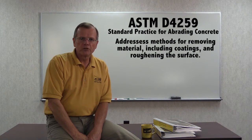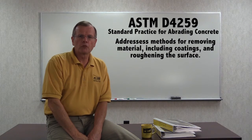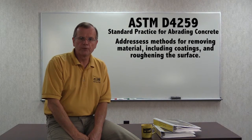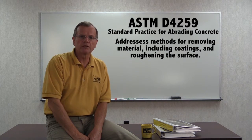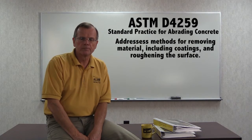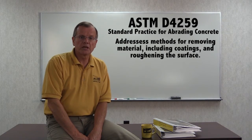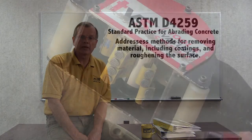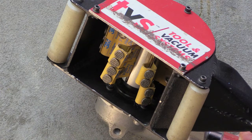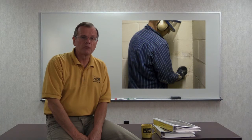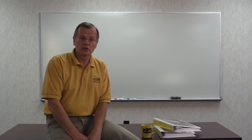ASTM D4259 addresses methods for removing material, including coatings, and for roughening the surface. The methods addressed in this standard include mechanical abrading, which involves power tools — both impact and grinding types. The power tools are capable of removing the coating, but they are better suited for localized use. The impact tools can also cause damage to the substrate.